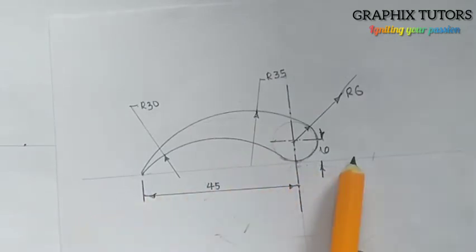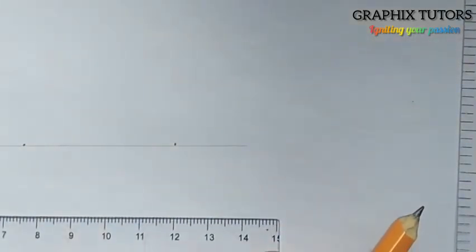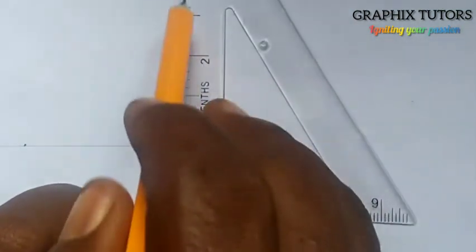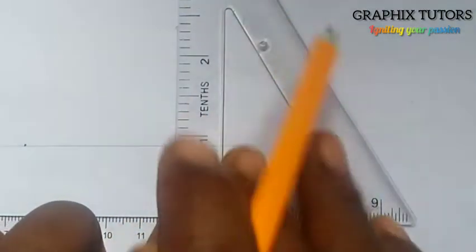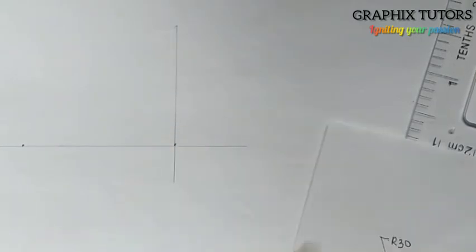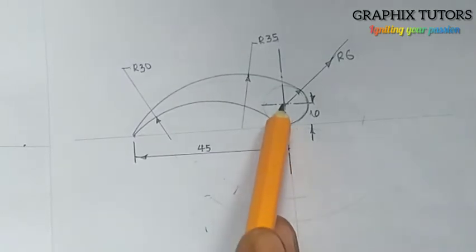I'll use a faint line first. I'll take my set square, place it on my T-square this way, and draw my vertical line that will intersect there. So I'm having this vertical line now. This is where they meet — this point here is the point that we have on the diagram.